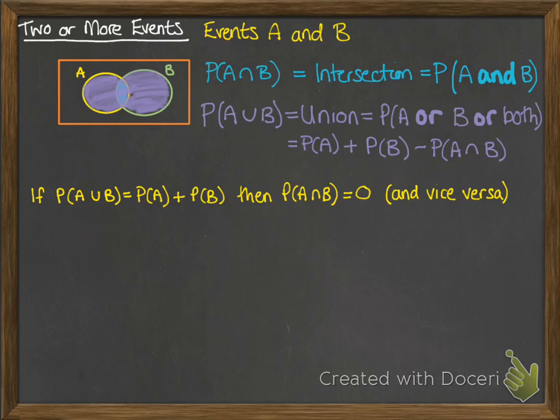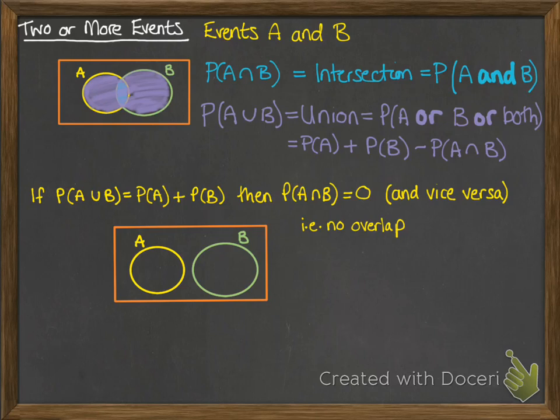and the same is true vice versa. So if we know that the probability of the intersection is zero, that means there's no overlap, so therefore the probability of the union will be the probability of A plus the probability of B. So it looks like this. This situation is called mutually exclusive. So the events A and B are mutually exclusive. That means they can't happen at the same time.